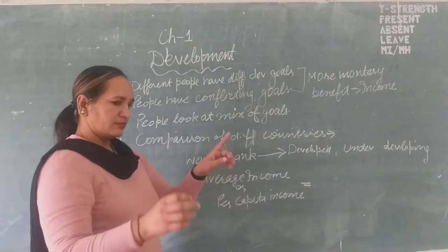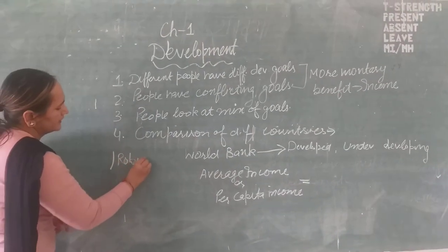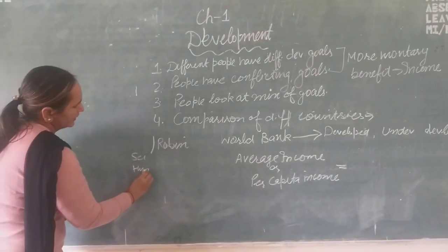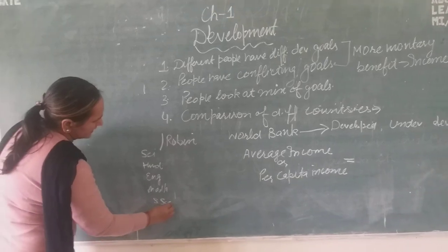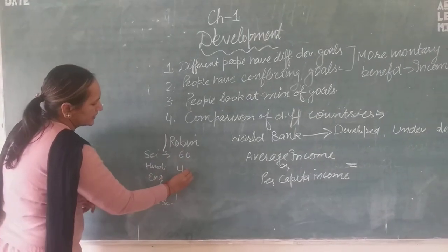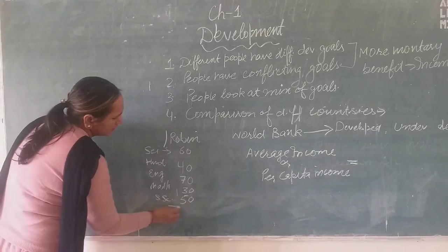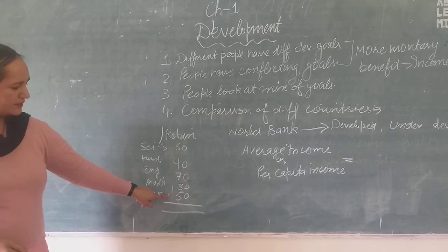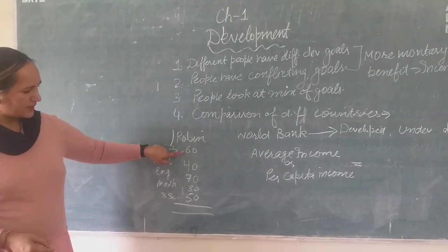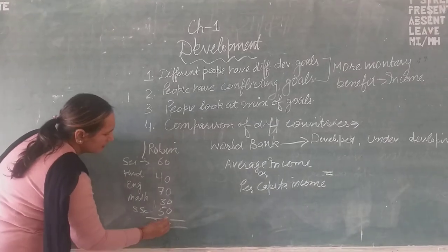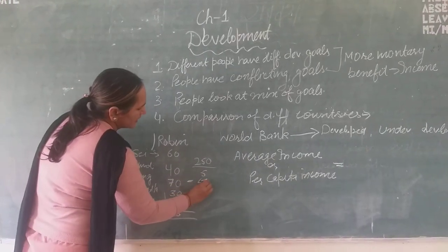Now, average income — suppose one child, Robin, has five subjects and the marks are: Science 60, Hindi 40, English 70, Maths 30, and Social Science 50. These are the marks in different subjects. To find out Robin's average marks, we will add these marks: 60 plus 40 plus 70 plus 30 plus 50 equals 250, divided by number of subjects, that is 5. Then, average marks is 50.